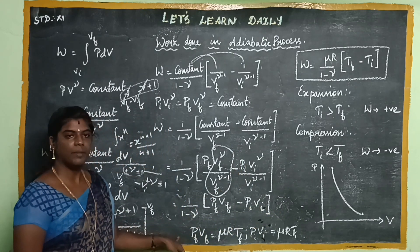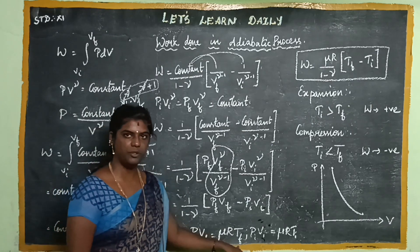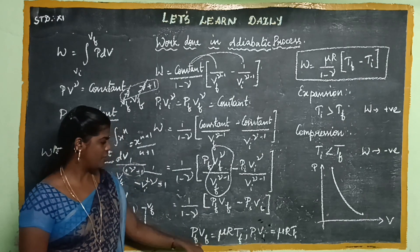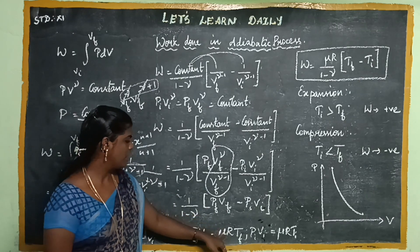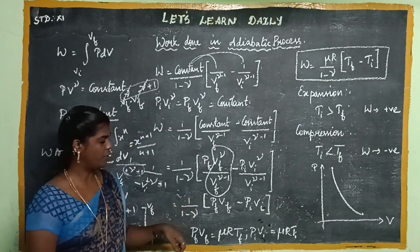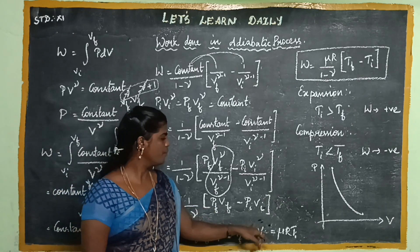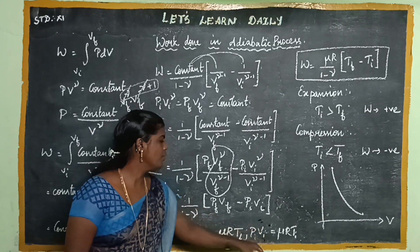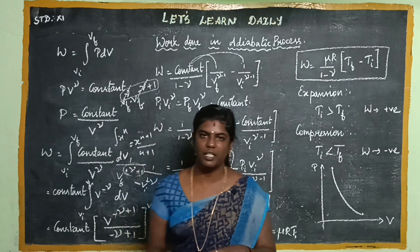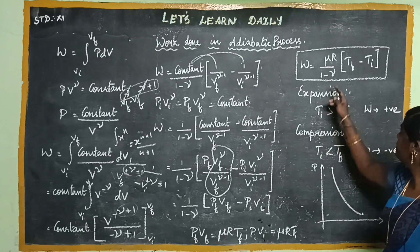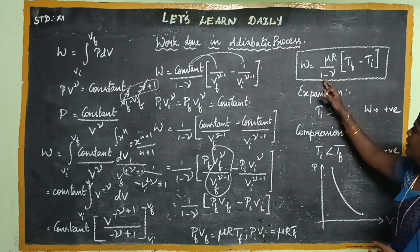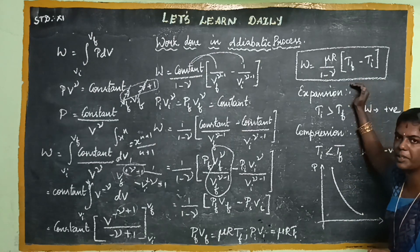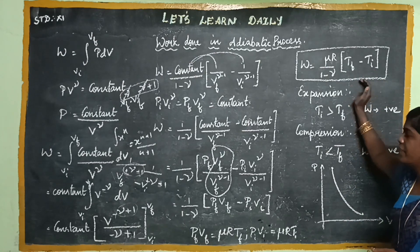Okay, so let's take the ideal gas equation: PV equals mu RT. Then for final and initial states, we have PFVF equals mu RTF and PIVI equals mu RTI. Put the mu R constant, so it will be common. So mu R by (1 minus gamma) into (TF minus TI). So this is our final expression for work done in an adiabatic process.